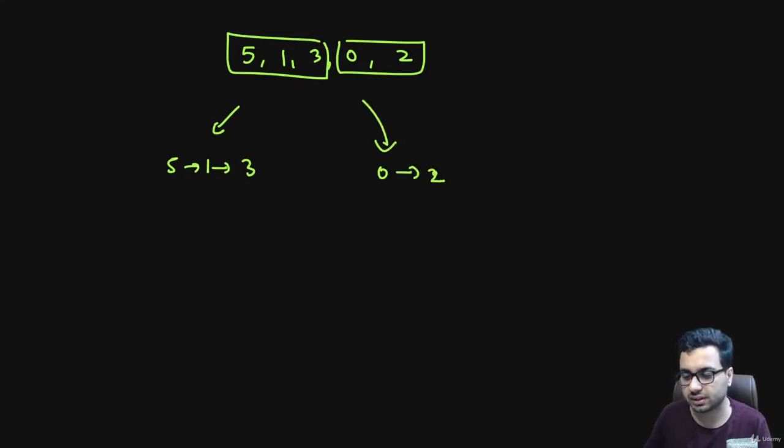The second step says you will sort the individual parts by recursively calling the merge sort function. Let's say we called merge sort on this one and we called merge sort on this one. What we get is 1, 3, 5, and from here it is sorted, so we get 0 and 2.